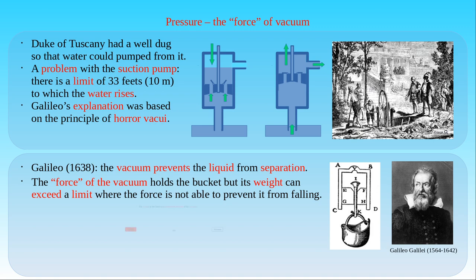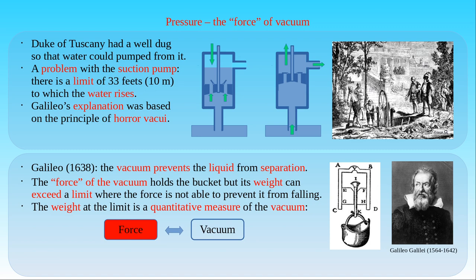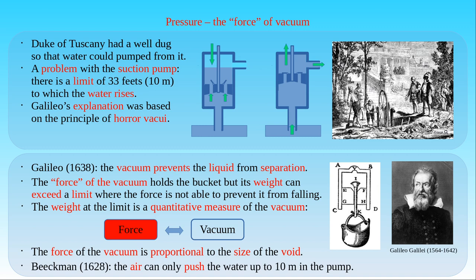Galileo was the first scientist in history who associated a physical quantity, namely force, with the phenomenon of vacuum. This was an important step in the understanding of the concept of pressure. The force of the vacuum acting on every part of the fluid is proportional to the size of the void which would appear as we reach the limit where the force of vacuum is not able to hold the parts of the fluid together. Galileo's theory on vacuum gave a satisfactory explanation of this problem for many of his contemporary scholars. Nevertheless, the real reason for the existence of the suction limit was already known in 1628. Isaac Beeckman, a Dutch scientist, stated that it is the air which can only push the water up to 10 meters in the pump. Therefore, it had not taken so long to establish the correct interpretation of Galileo's experiment studying the force of vacuum.